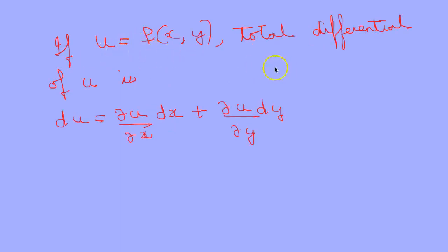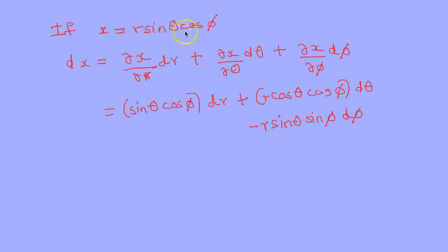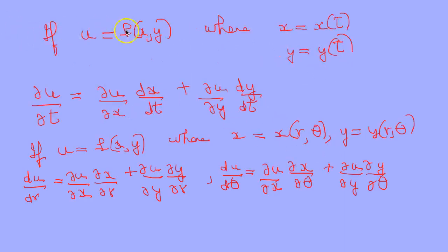If u is a function of x and y, the total differential du is defined as (∂u/∂x)dx + (∂u/∂y)dy. For example, if x = r·sinθ·cosφ, then dx = sinθ·cosφ·dr + r·cosθ·cosφ·dθ − r·sinθ·sinφ·dφ. If u is a function of x and y where x and y are both functions of t, then du/dt = (∂u/∂x)(dx/dt) + (∂u/∂y)(dy/dt).